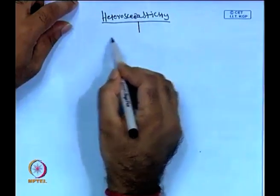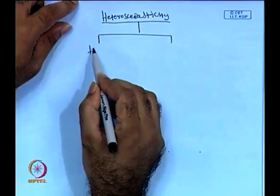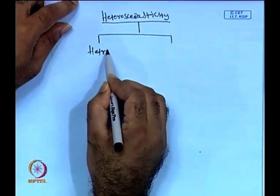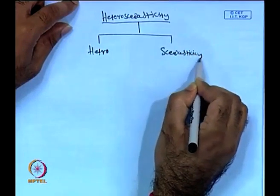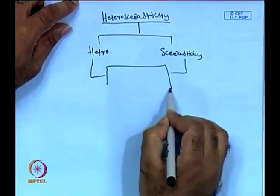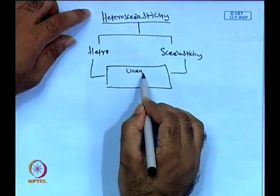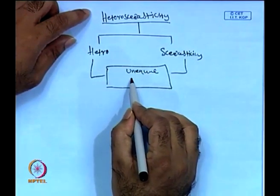Today we will continue with the heteroscedastic problem. In the last lectures, we have discussed and started a bit about the heteroscedastic issue — how it arises in the econometric model. We highlighted that heteroscedasticity has two specific aspects. Briefly, it is the equation of unequal error variance.